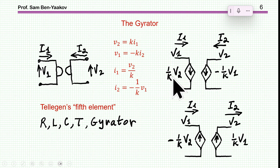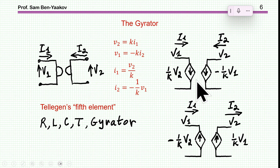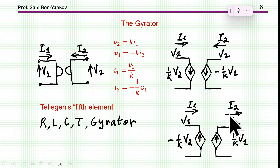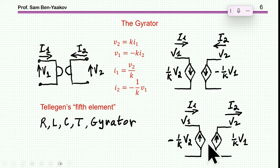We can represent the gyrator by an electrical circuit — we can actually build one if we want, but it's not a physical device; it's just a circuit that emulates it. For simulation, we can represent it as two dependent current sources. On the left we have a current source which is a function of the voltage on the right times a constant — this is the gain of the gyrator. On the right side we have the other dependent current source. To preserve power — since this device is passive, it does not generate or consume any power — the output current direction requires a minus sign. This equivalent circuit describes the gyrator with these relationships.